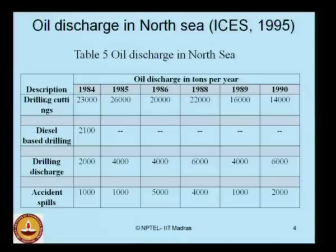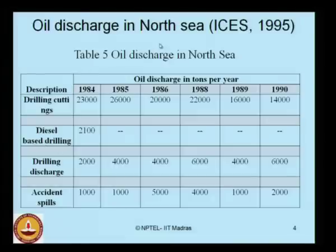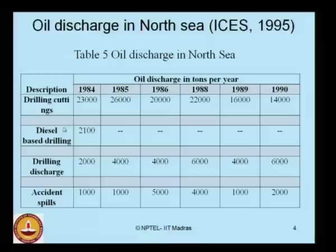In 1984, drilling cuttings had an oil discharge of over 23,000 tons, which was substantially reduced to about 14,000 tons per year by 1990. Diesel-based drilling discharges in the North Sea were over 2,100 tons in 1984, with insignificant reporting subsequently. Drilling discharge started at 2,000 tons per year in 1984 and gradually rose to over 6,000 tons in 1990.